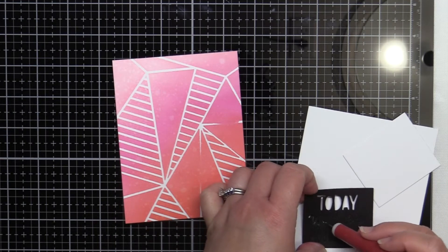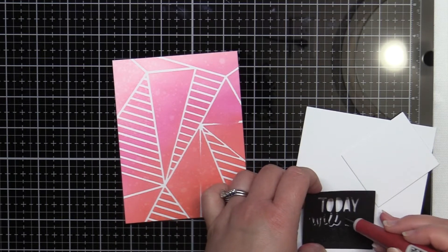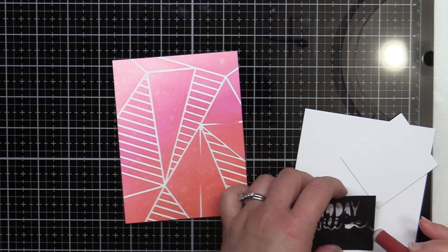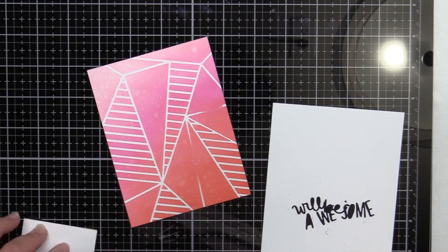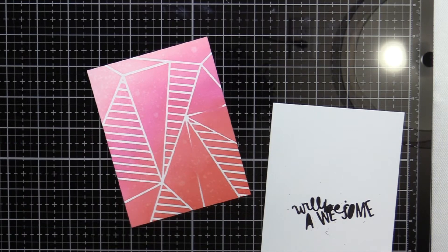Next, I die cut the Today Will Be Awesome die with black and white cardstock. I weeded out the letters but reserved them. Then I adhered the two squares to my stencil panel, carefully covering the blending mistake. It's like it never happened.